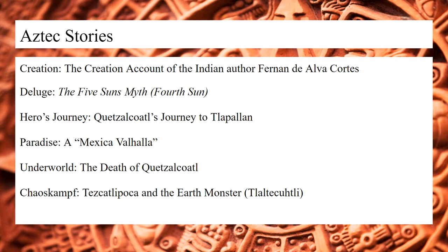An example of a hero's journey can be seen as Quetzalcoatl journeying to Tlapalan — the land where he came from — after the Toltecs decided to turn from him and instead worship Tezcatlipoca. For the paradise motif, Aztec warriors believed they would service the sun after they died, admitted to the dwelling place of the god and sharing in feasts with him — not dissimilar to a Valhalla of sorts, hence the term a Mexica Valhalla. Some underworld myths depicting the death of Quetzalcoatl hold that he wandered the underworld for eight days before being resurrected. For Chaos Kampf, Tezcatlipoca had to fight the earth monster Tlaltecuhtli and as a result lost his foot.